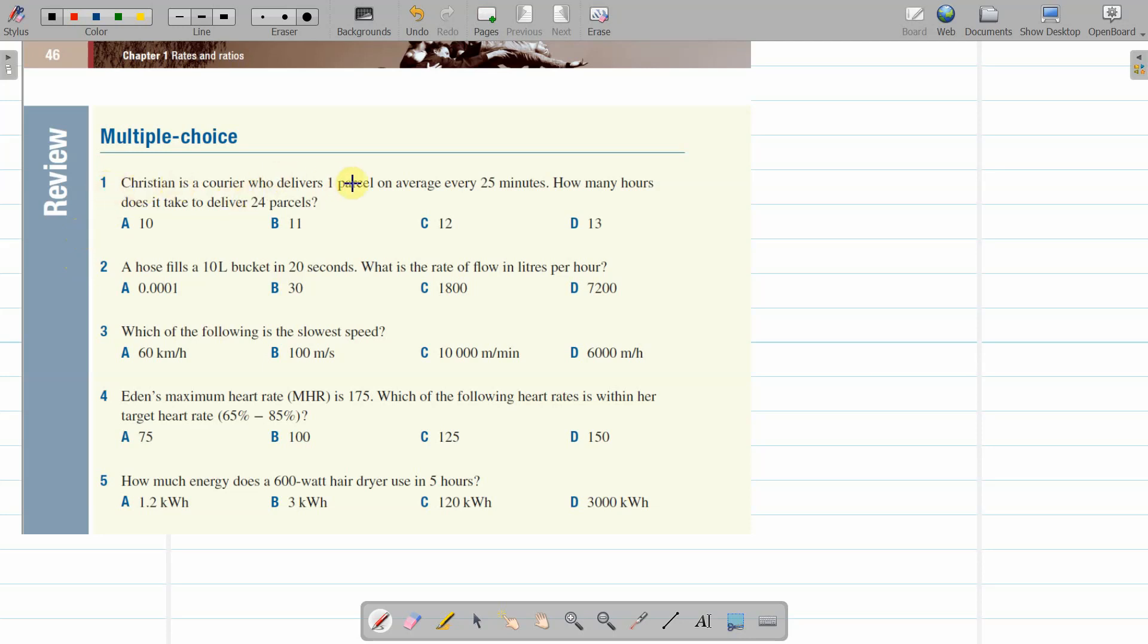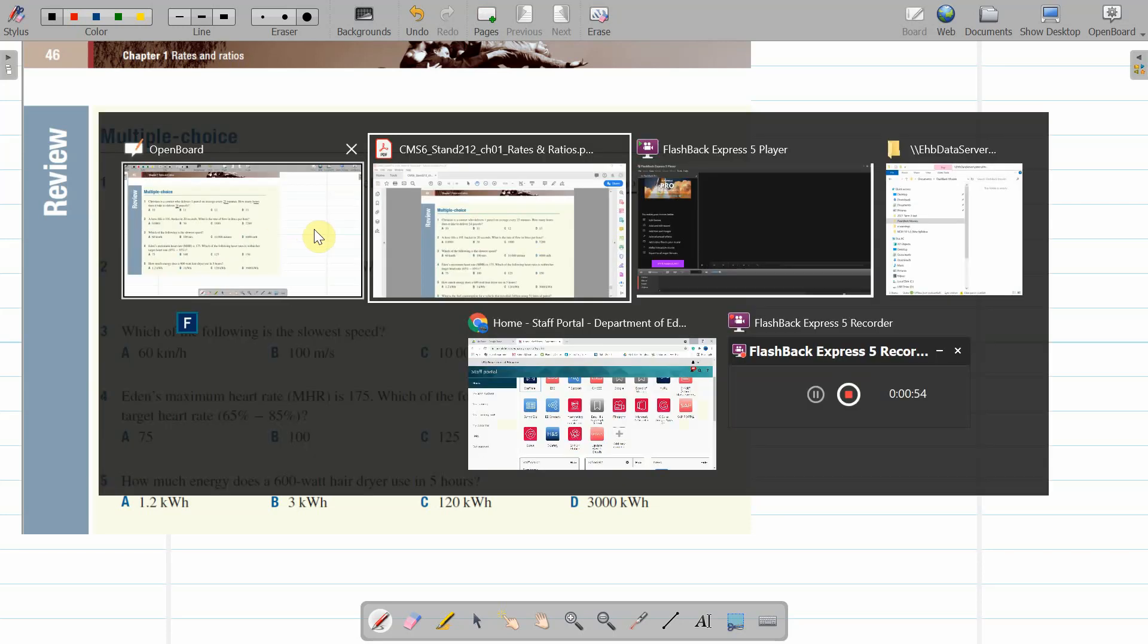Christian is a courier who delivers one parcel on average every 25 minutes. How many hours? We need hours. 25 minutes, 24 parcels in how many hours? So what we're going to do is, if it's 25 minutes for 1, how many for 24?